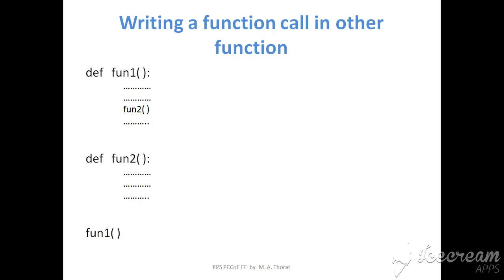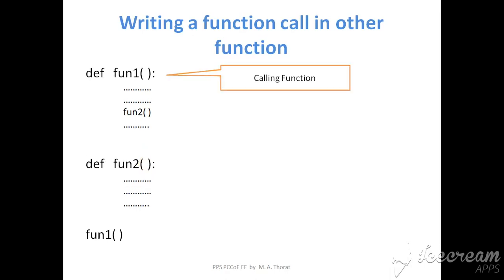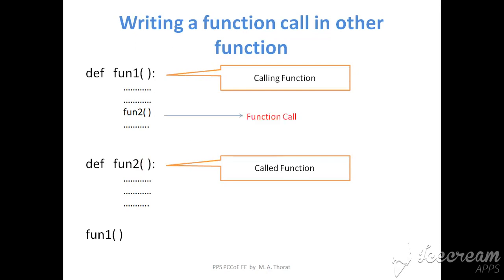In this scenario, function 2 is called from function 1. We call function 1 the calling function because it initiates the call to function 2. Function 2 is called the called function because it is called from function 1. To summarize: function 1 is the calling function which initiates a call to function 2, and function 2 is the called function which is called from function 1.